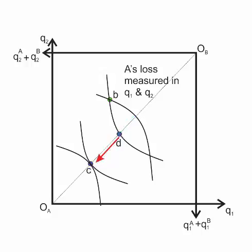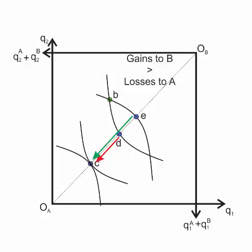Let's think about how much worse individual A is. Individual A is indifferent between points B and D, and then their welfare has gone down. That could be measured in terms of Q1 and Q2 by that red arrow. So clearly measured in terms of goods Q1 and Q2, the gain to B is greater than the losses to A.